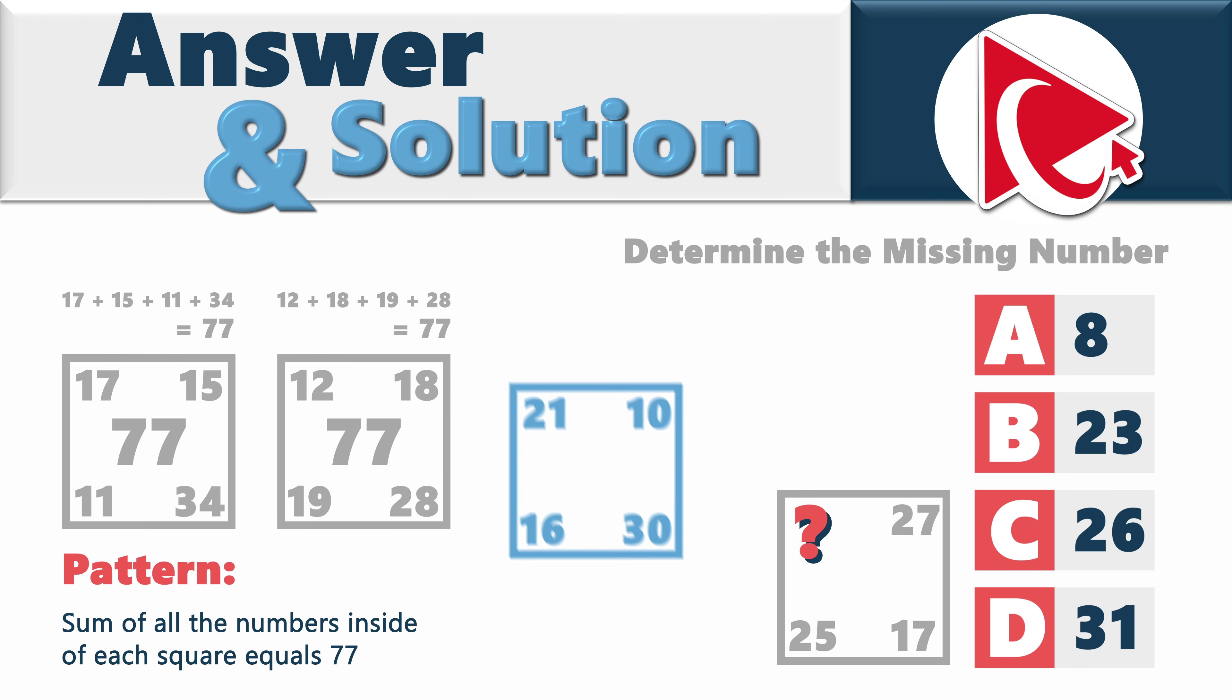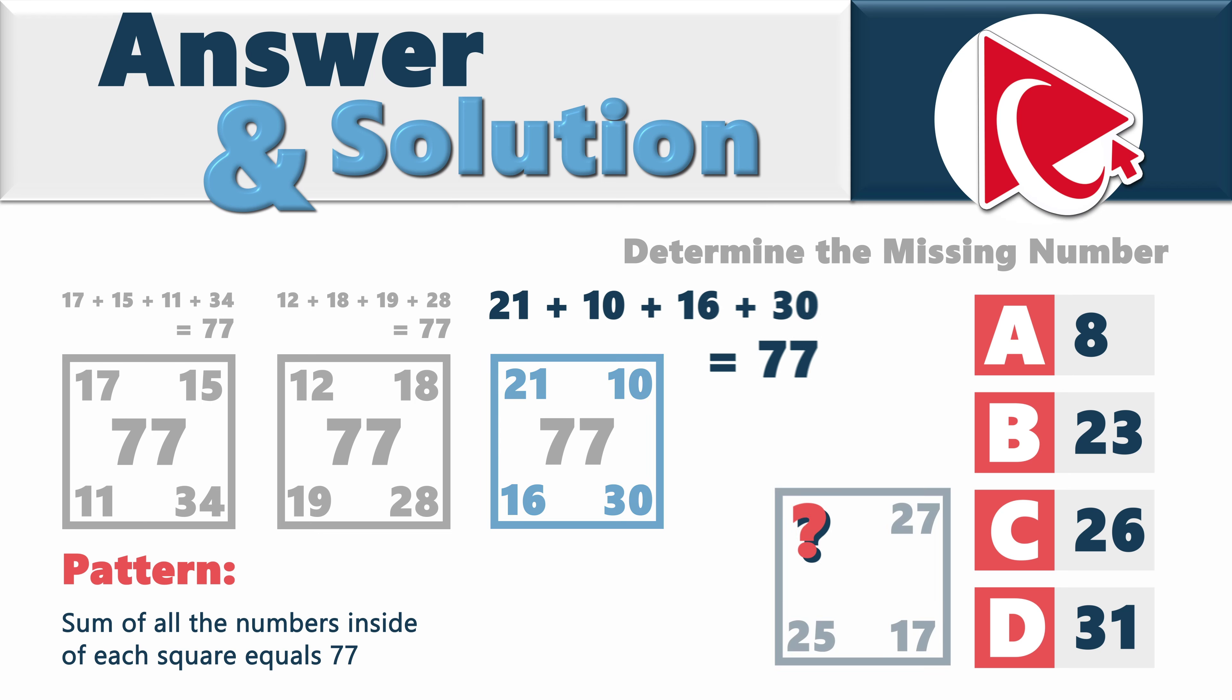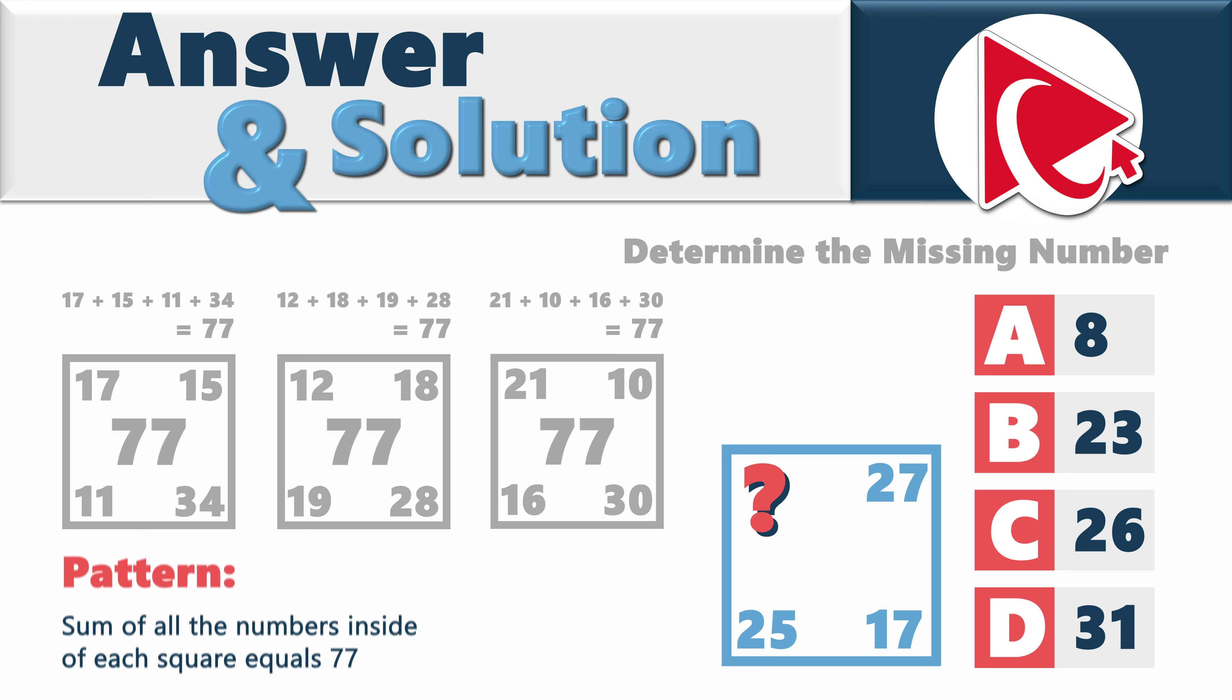Let's confirm it with the second square. 12 plus 18 plus 19 plus 28 also equals 77. Believe it or not, but in third square, 21 plus 10 plus 16 plus 30 also equals 77. Now we can calculate the missing number. 27 plus 17 plus 25 equals 69. 77 minus 69 equals 8. So the correct answer here is choice A, 8.